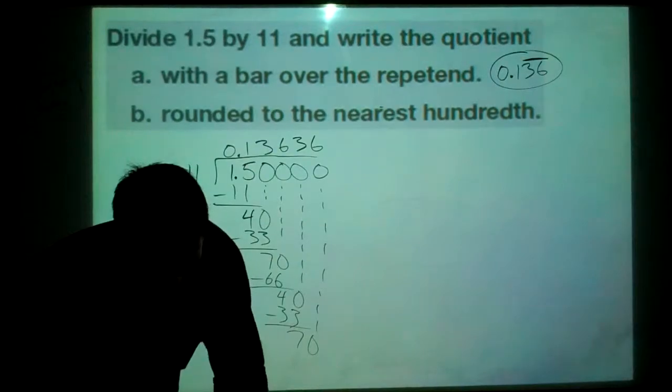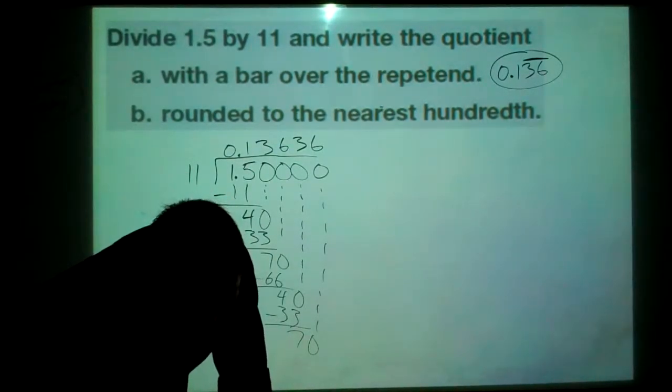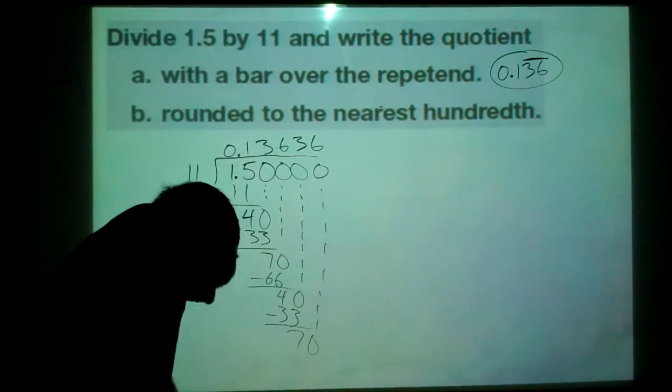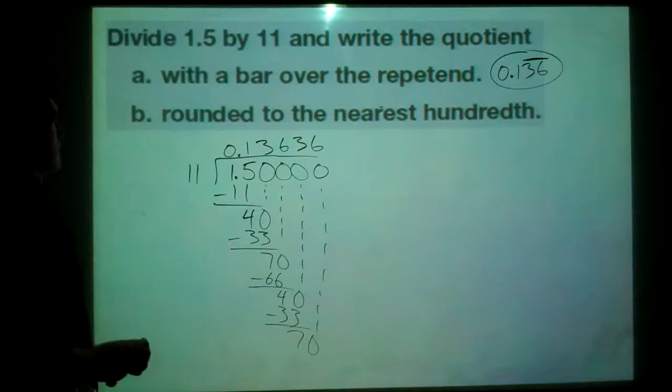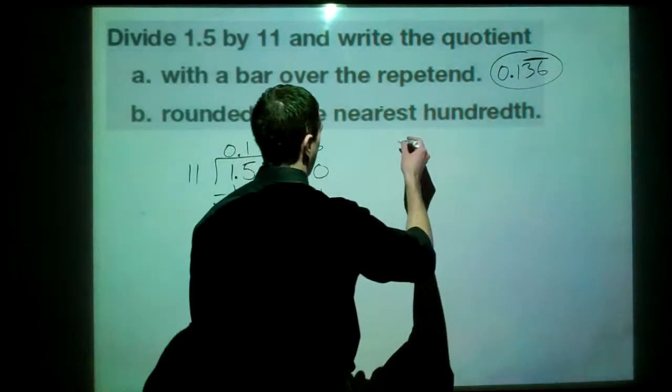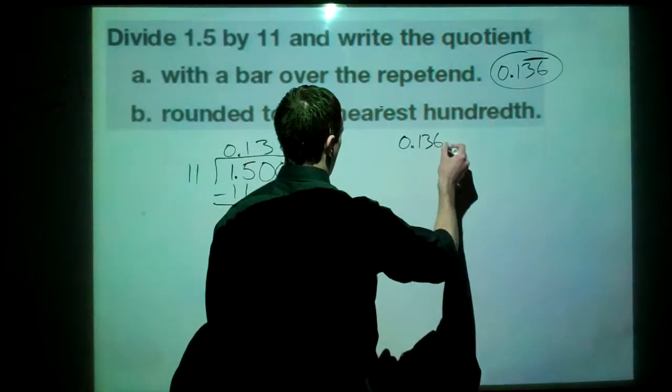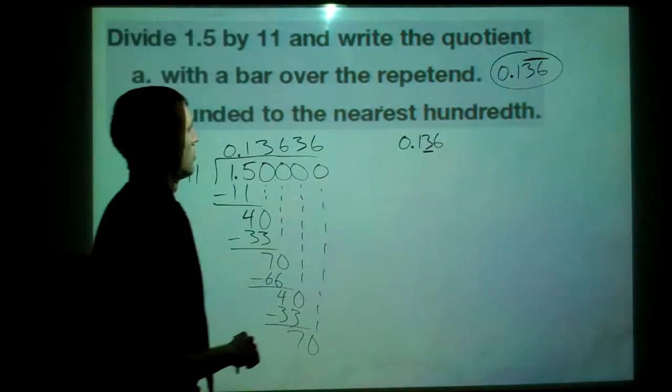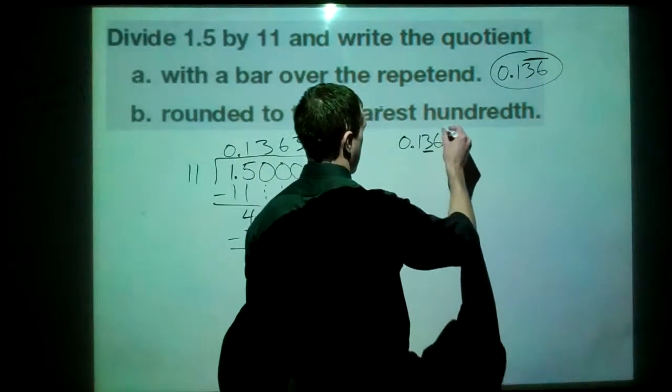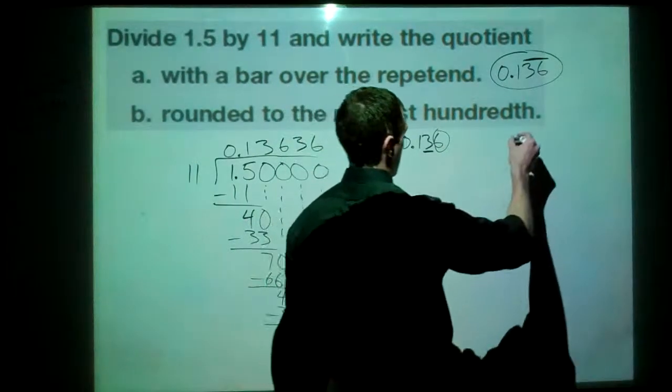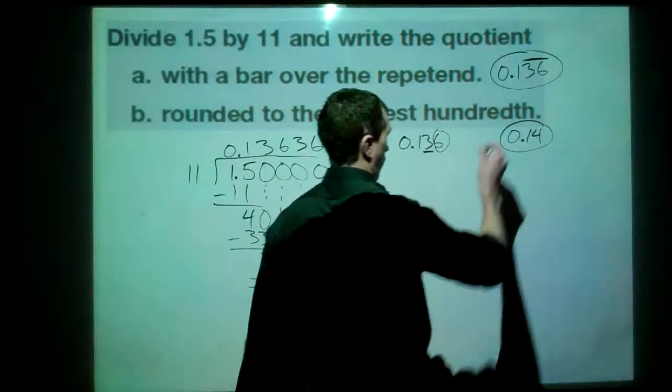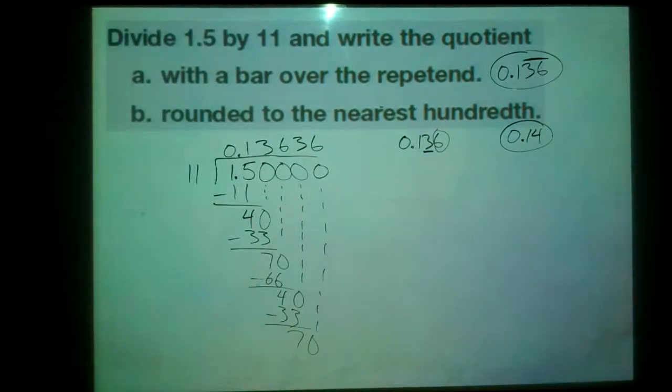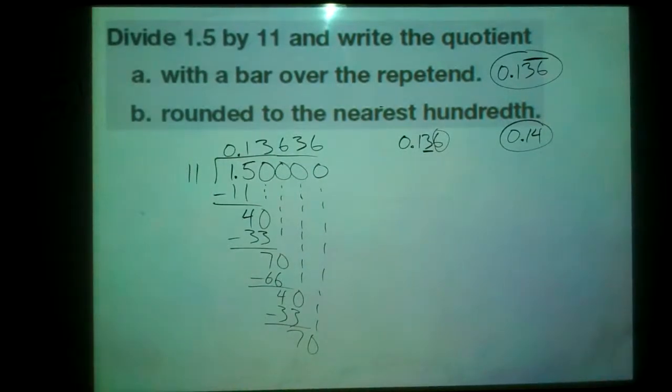Now what we want to do is round that to the nearest hundredth. To the nearest hundredth. The nearest hundredth is right here. So we're going to round this up because that is five or bigger. So we should get 0.14. And that is our last example for today. So we'll be talking about more of this tomorrow.